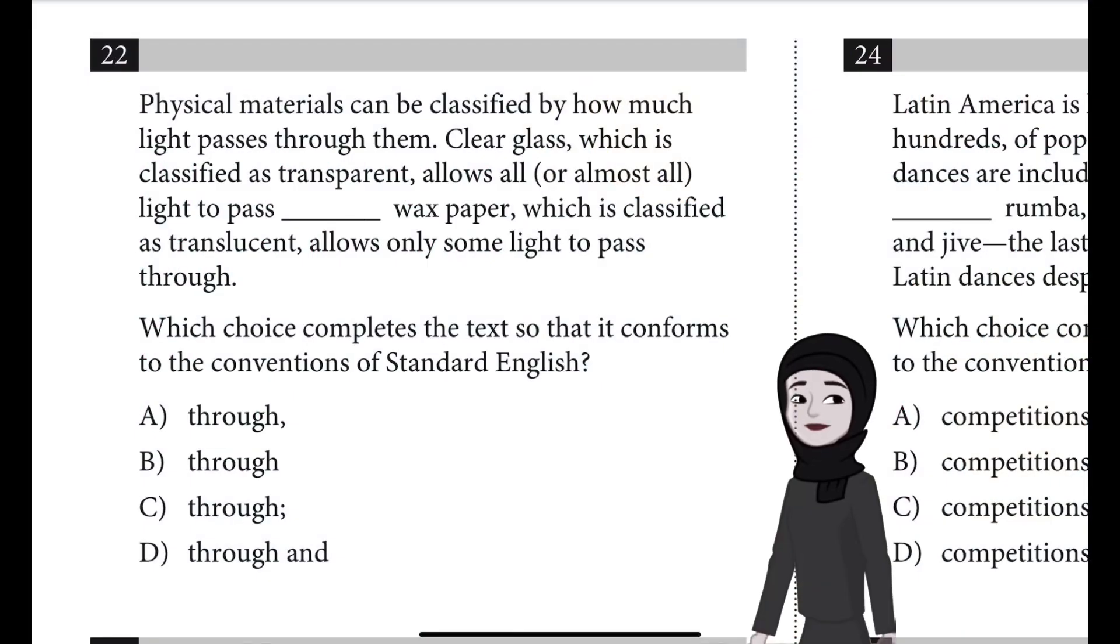Question number 22: Physical materials can be classified by how much light passes through them. Clear glass, which is classified as transparent, allows all or almost all light to pass [blank]. Wax paper, which is classified as translucent, allows only some light to pass through. Which choice completes the text so that it conforms to the conventions of standard English?